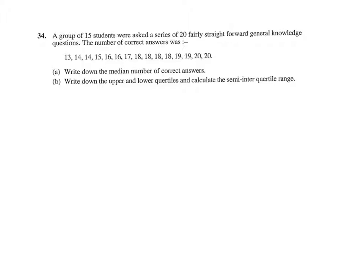Write down the median number of correct answers. Now that's the middle number. So we've got 15 students, a total of 15 numbers. 15 plus 1 is 16, divided by 2 is 8. So it's the 8th number: 1, 2, 3, 4, 5, 6, 7, 8. The median then... Now the median is also called the second quartile, that's Q2.